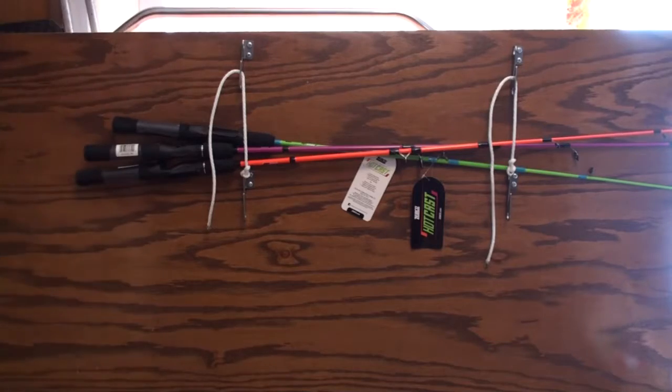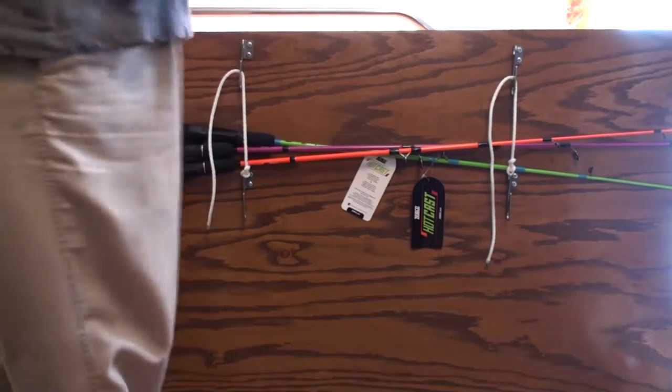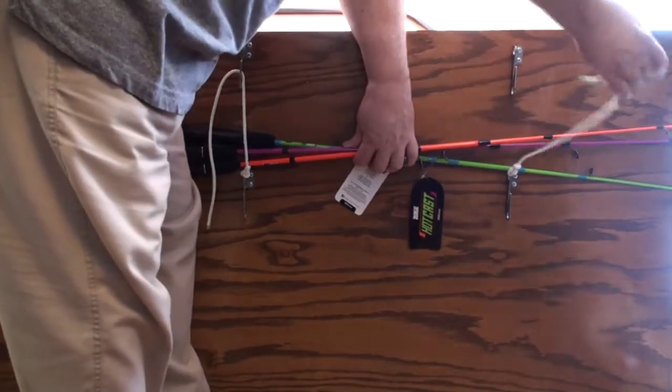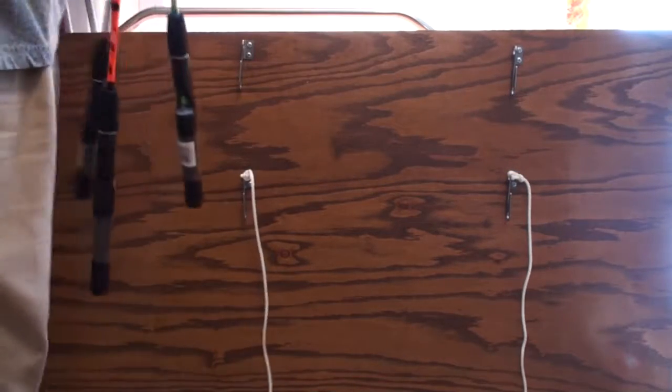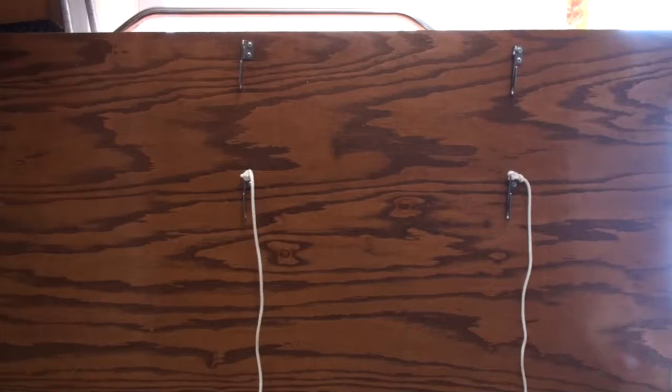To undo it, you just simply pull up the rope on each side and you can un-stow your objects. That quickly, that easily. Want to see that again?